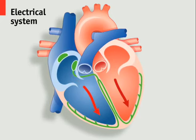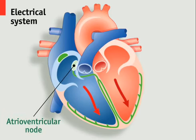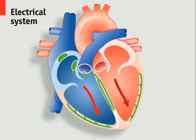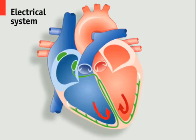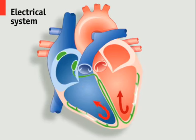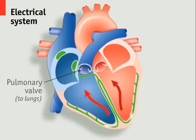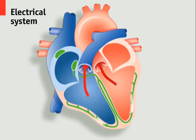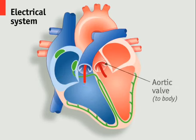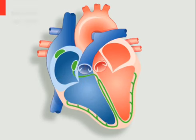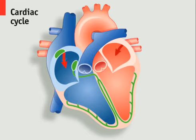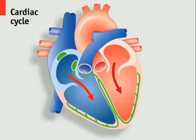The electrical signal is then picked up by the atrioventricular node and directed into the Purkinje fibres in the ventricle walls, causing the ventricles to contract. The blood is then pumped through the pulmonary valve on the right to the lungs and the aortic valve on the left to the rest of the body. These valves close and the cycle then restarts.